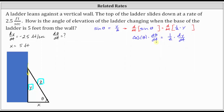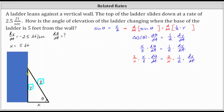Now we need to solve the equation for dθ/dt. Going back to the right triangle, cosine theta equals the adjacent side over the hypotenuse, which is X divided by Z. Replacing cosine theta with X/Z gives us X/Z times dθ/dt equals 1/Z times dy/dt. Multiplying both sides by Z/X, the Z's simplify out, leaving dθ/dt equals 1/X times dy/dt.